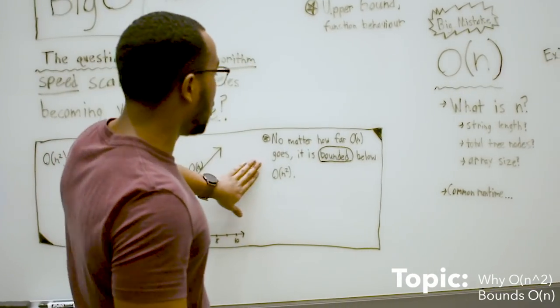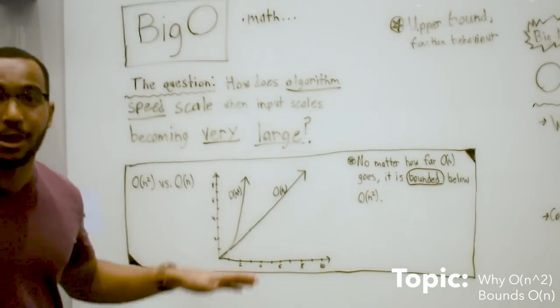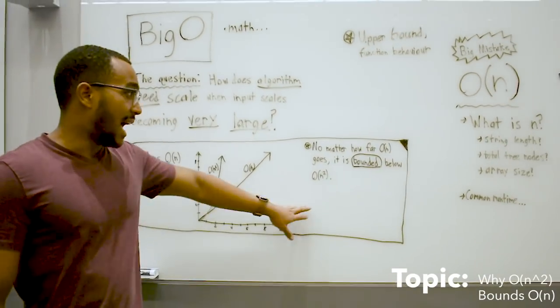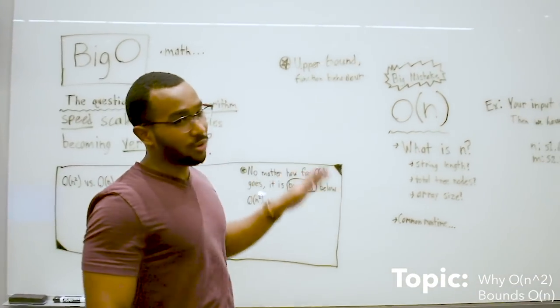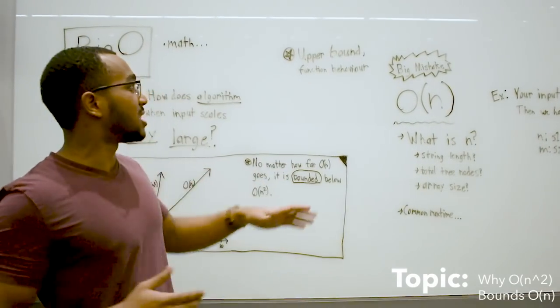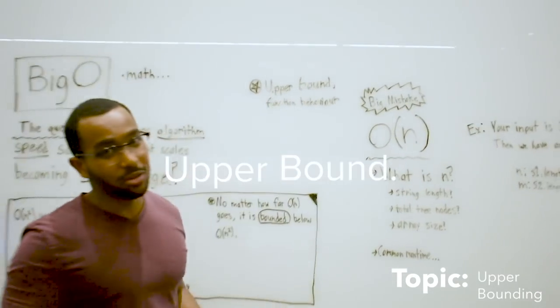No matter how far O of n goes, it's going to be bounded by O of n squared. Bounded is a very key term. What big O gives us is a very tight upper bound to functions.